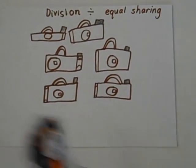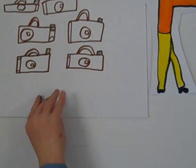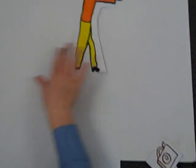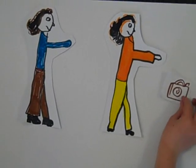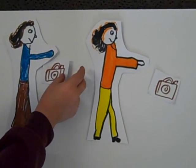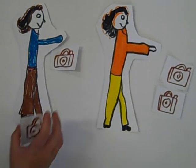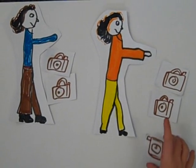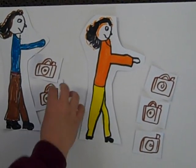We're going to share it between Mrs. Gridley and Mrs. Scott. Mrs. Gridley gets one. Mrs. Scott gets one. Mrs. Gridley gets two. Mrs. Scott gets two. Mrs. Gridley gets three. Mrs. Scott gets three.